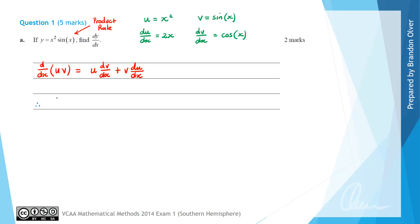Therefore the derivative dy/dx that we're asked to calculate in this question is going to equal u, which is x squared, times dv/dx, which is cos of x,